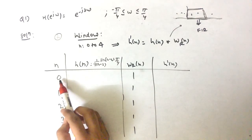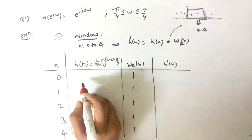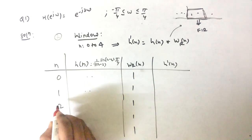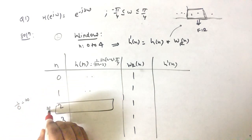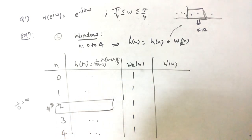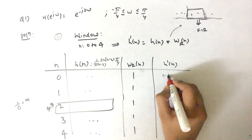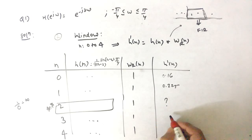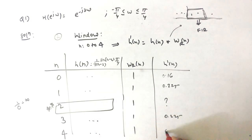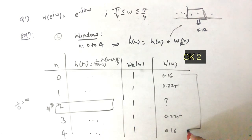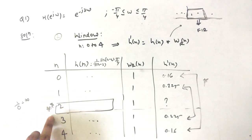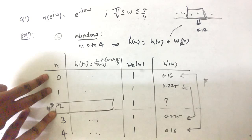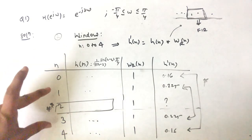Putting in the values: for n=0 we get 0.16, for n=1 we get 0.225, n=2 is still unknown (we'll handle it separately), n=3 gives 0.225, and n=4 gives 0.16. Notice the symmetry — first and last are the same, second and second-last are the same. That is Trick #2: use the symmetric property, so you only need to calculate up to the midpoint.